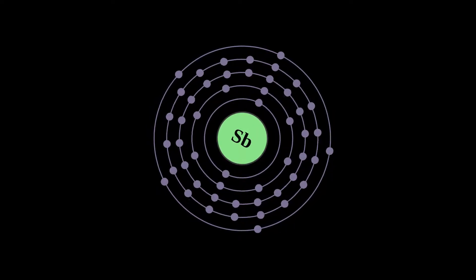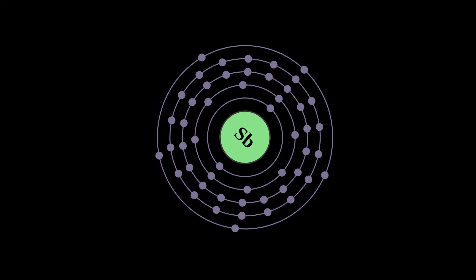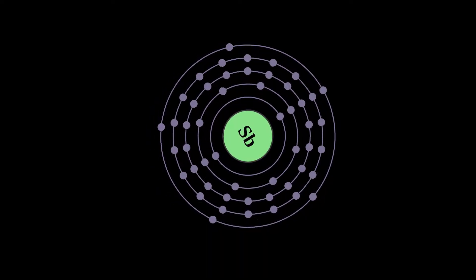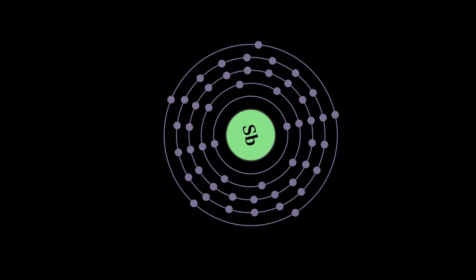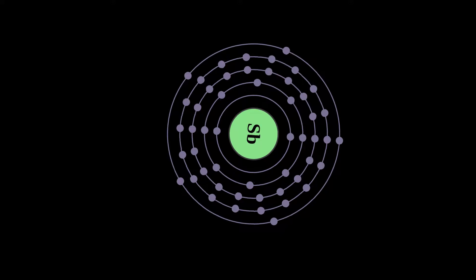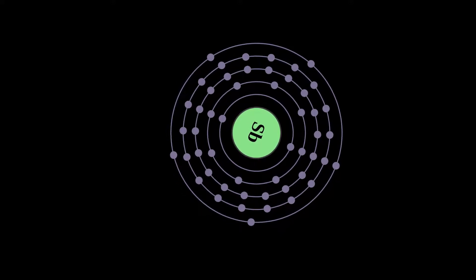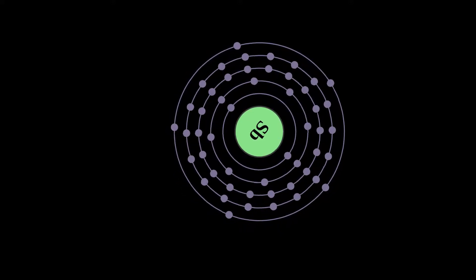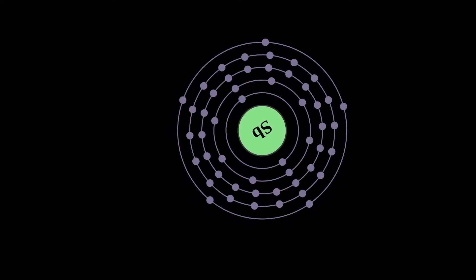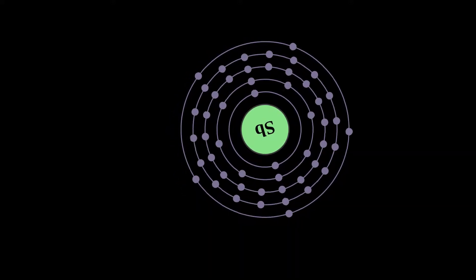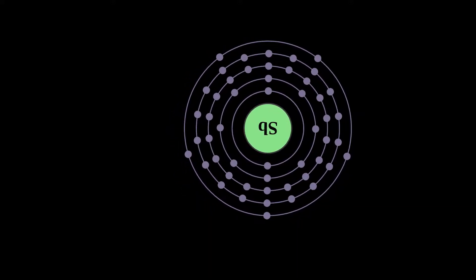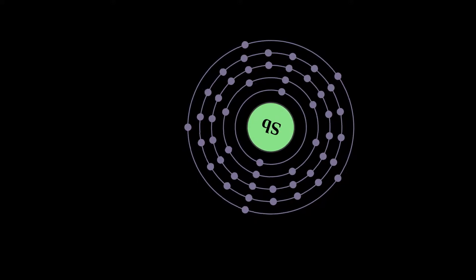Antimony is a chemical element with symbol Sb and atomic number 51. A lustrous gray metalloid, it is found in nature mainly as the sulfide mineral stibnite.